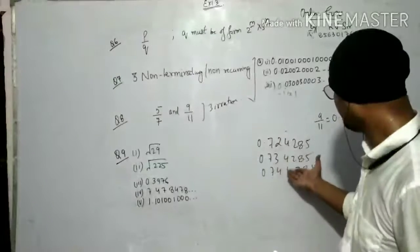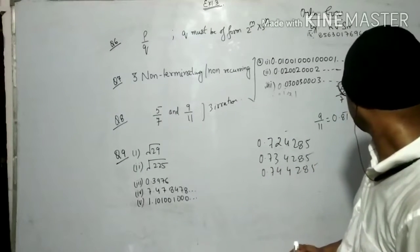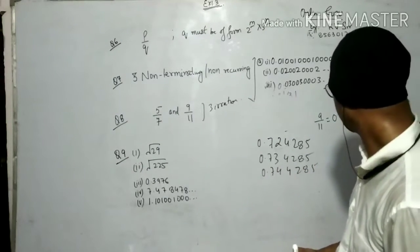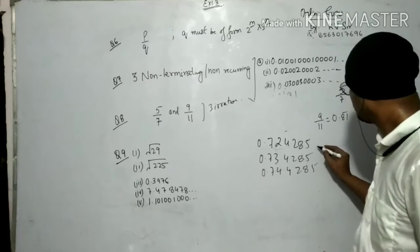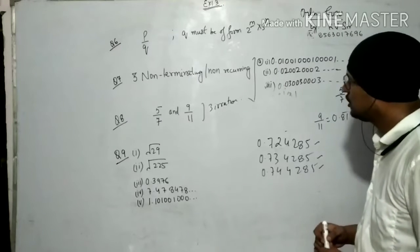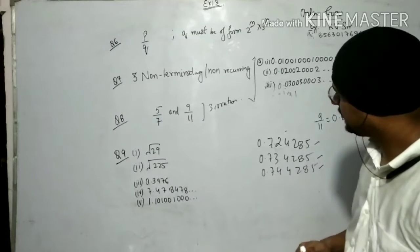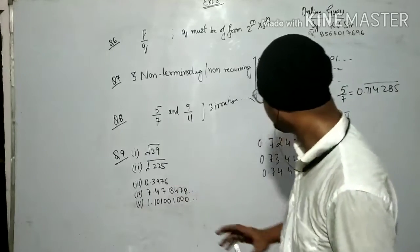We have found the values of 5/7 and 9/11. We need to find three numbers between them that are irrational — meaning they don't terminate and don't repeat. For example, 0.72424224222... or similar non-repeating, non-terminating decimals between 0.71428... and 0.81818... These are the irrational numbers in between.